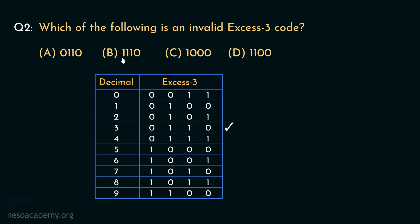Let's observe option B now: 1110. Now if you look at the chart, you won't be able to find this particular value. So clearly, this is going to be an invalid XS3 code. But before making up our mind, let's be certain about this option by judging the next two. C is giving us 1000. Now if you observe, for 5 in XS3, we have the encoding 1000. So yes, this too is a valid XS3 code. Now coming to option D, 1100 is given. You will find that for 9, the encoding in XS3 is 1100. So this too is a valid XS3 code.